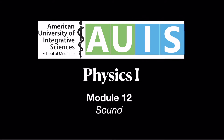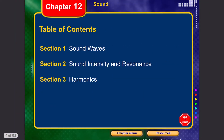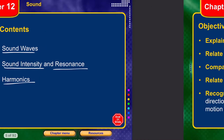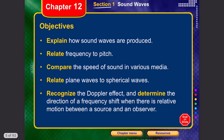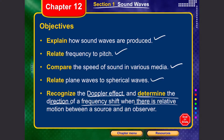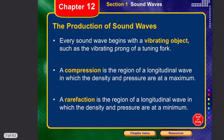Welcome to module 12 on sound. In this lecture we'll talk about sound waves, sound intensity and resonance, and harmonics. The objectives are to explain how sound waves are produced, relate frequency to pitch, compare the speed of sound in various media, relate plane waves to spherical waves, recognize the Doppler effect, and determine the direction of a frequency shift when there is relative motion between a source and an observer.